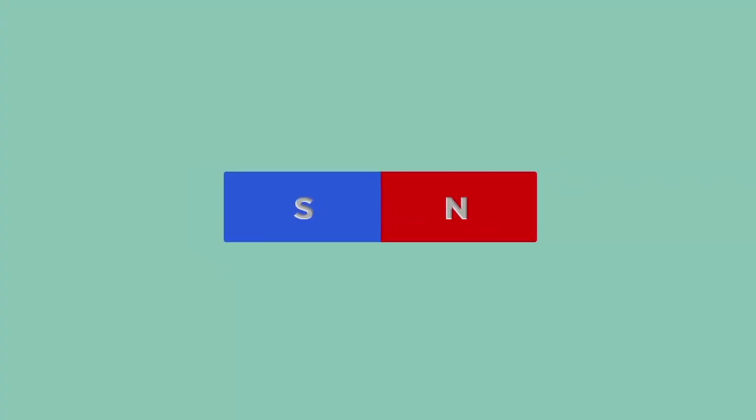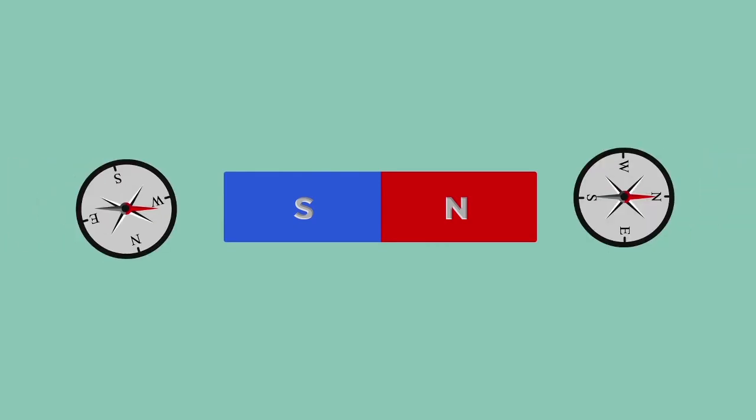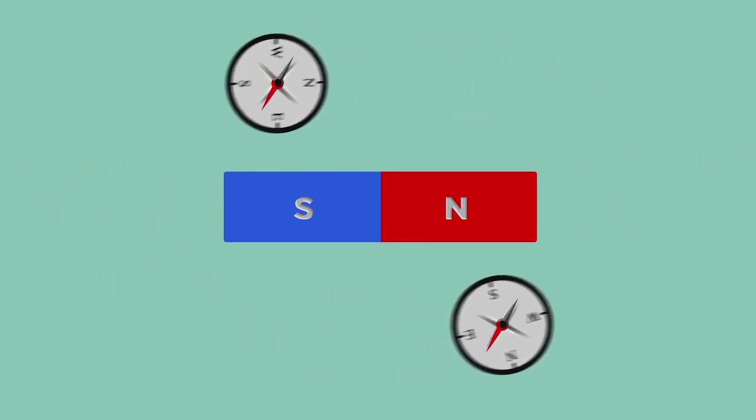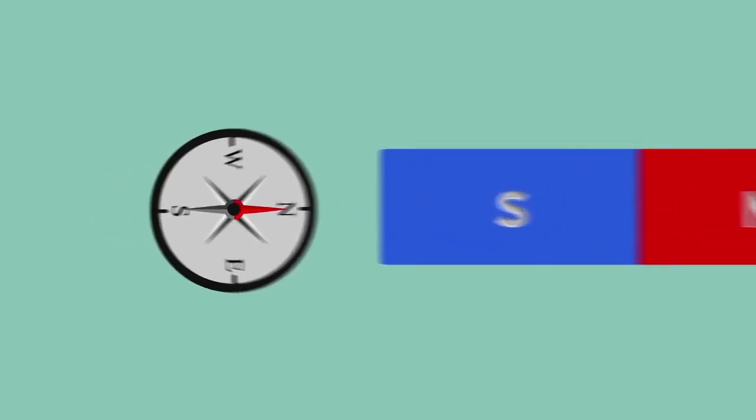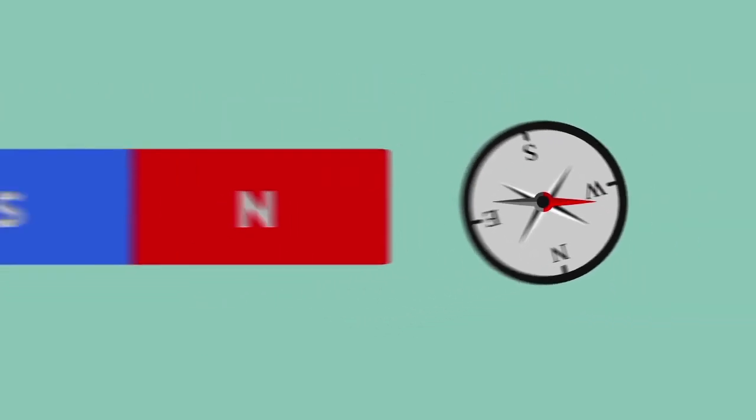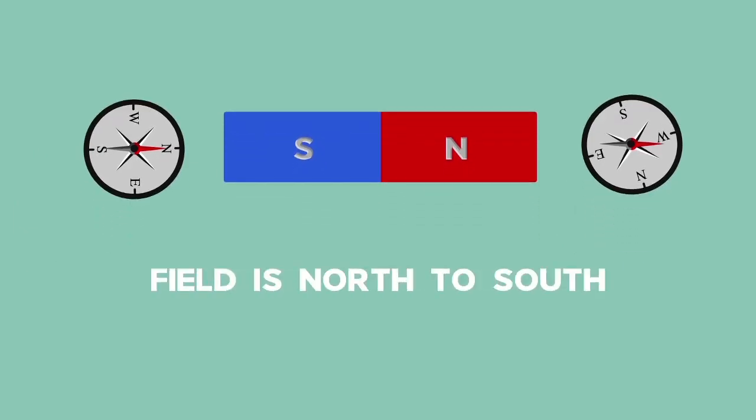Another way to detect the magnetic field around magnets is to place plotting compasses around the bar magnets. Notice that the compasses point in the direction of the North Pole. It can be shown that the field lines run from North to South. That is convention.